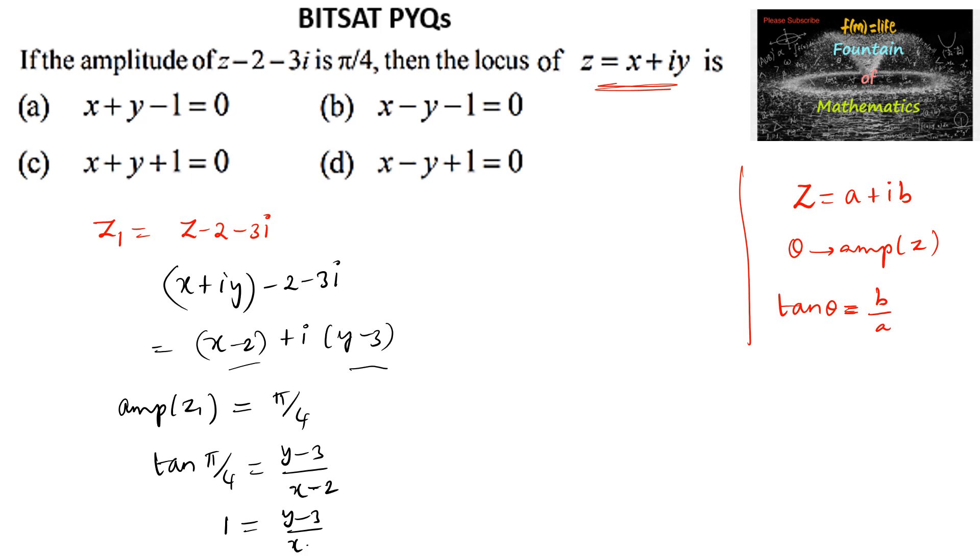Cross multiplying, we get x - 2 = y - 3, or x - y - 2 + 3 = 0, which simplifies to x - y + 1 = 0. This is option (d).